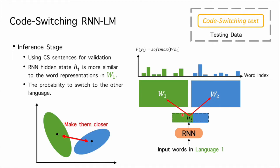So we assume that overlapping spaces benefit code-switching language modeling. To this end, we attempt to bring two spaces W1 and W2 closer to each other.